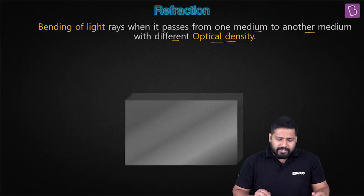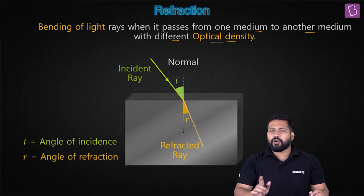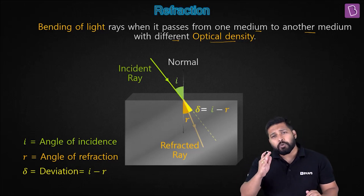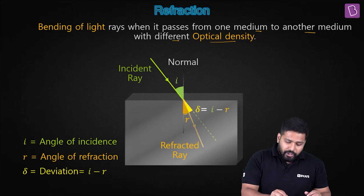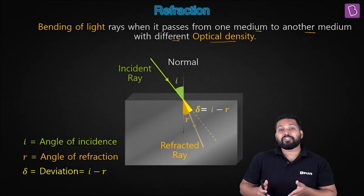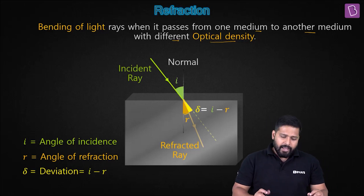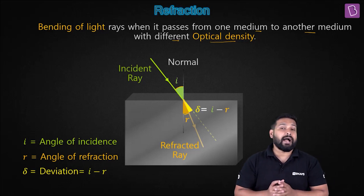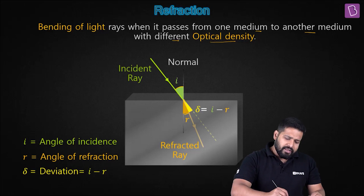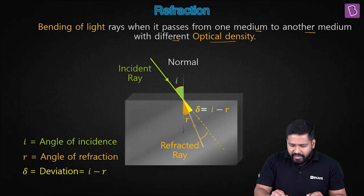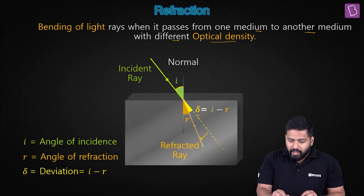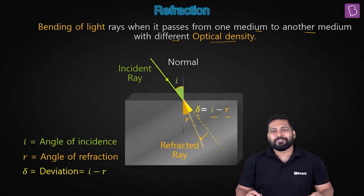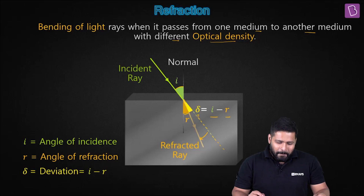Consider a glass slab. The ray coming towards the glass slab is called the incident ray. If you draw a perpendicular to the point of incidence, that is called the normal. Once it passes through another medium, it bends, and the angle it makes with the normal is called the angle of refraction. The ray which emerges is called the refracted ray. The angle the incident ray subtends with the normal is called the angle of incidence. The ray got deviated — the angle of deviation is i minus r.